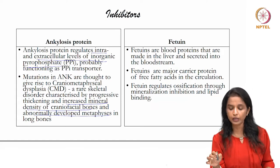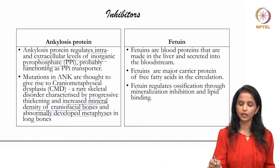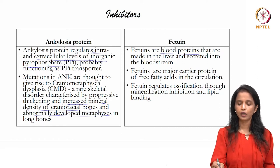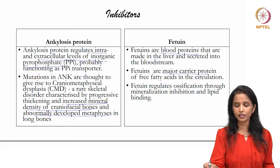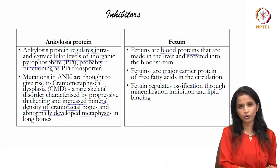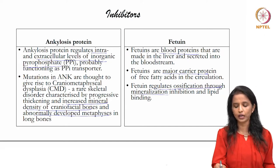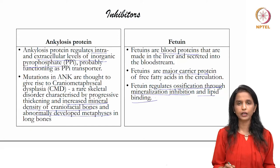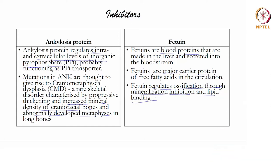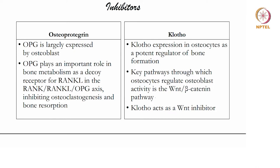Another inhibitor is fetuin, a very important blood protein — a carrier protein similar to albumin — that is important in regulating ossification through mineralization inhibition and lipid binding. It acts as an inhibitor by inhibiting mineralization through lipid binding. In addition to pyrophosphates, matrix GLA proteins, and ankylosis protein, we also have fetuin, osteoprotegerin, and Clotho as inhibitors.